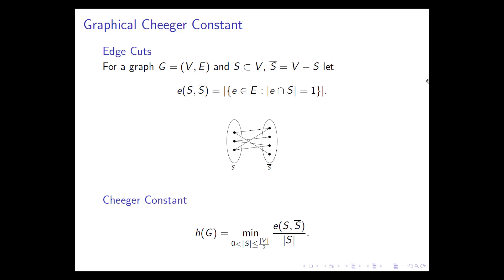We assume the graph is connected. If the graph is non-connected, there is a partition that disconnects it and this quantity would be zero. Once the graph is connected, this number is positive, and the bigger it is, the more connected the graph is.